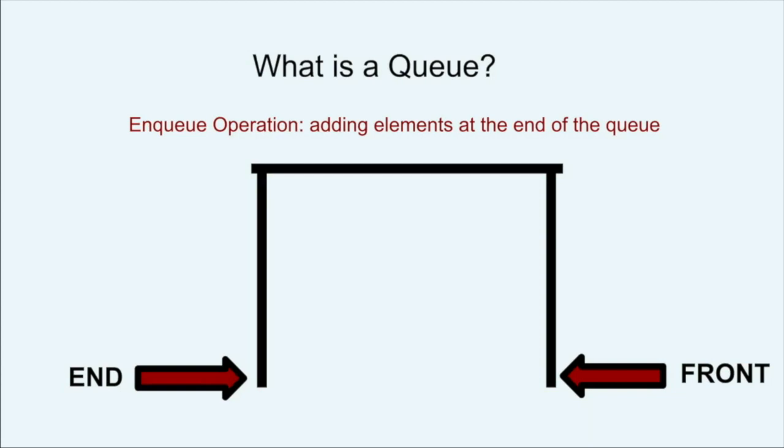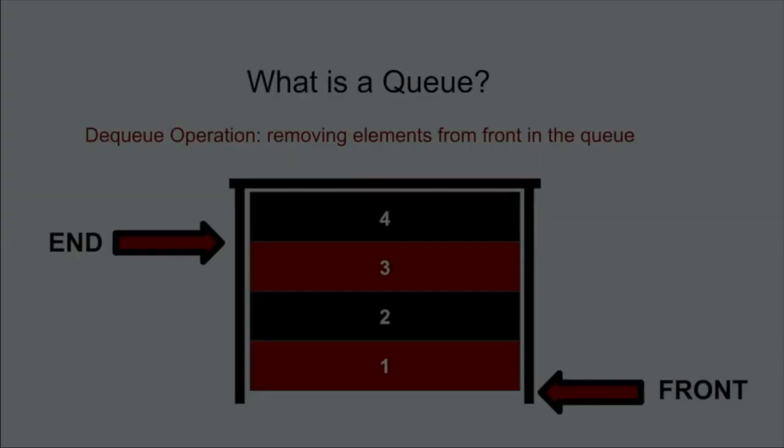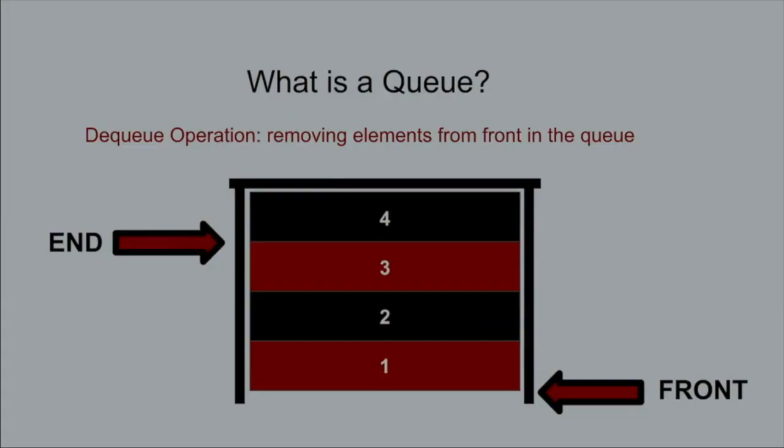Let's understand the working of a queue using an illustration. Adding elements to a queue is called the enqueue operation. Notice how the pointer end changes with the addition of each new element. Front always points to the first element, whereas end will point to the last element of the queue when all elements have been added.